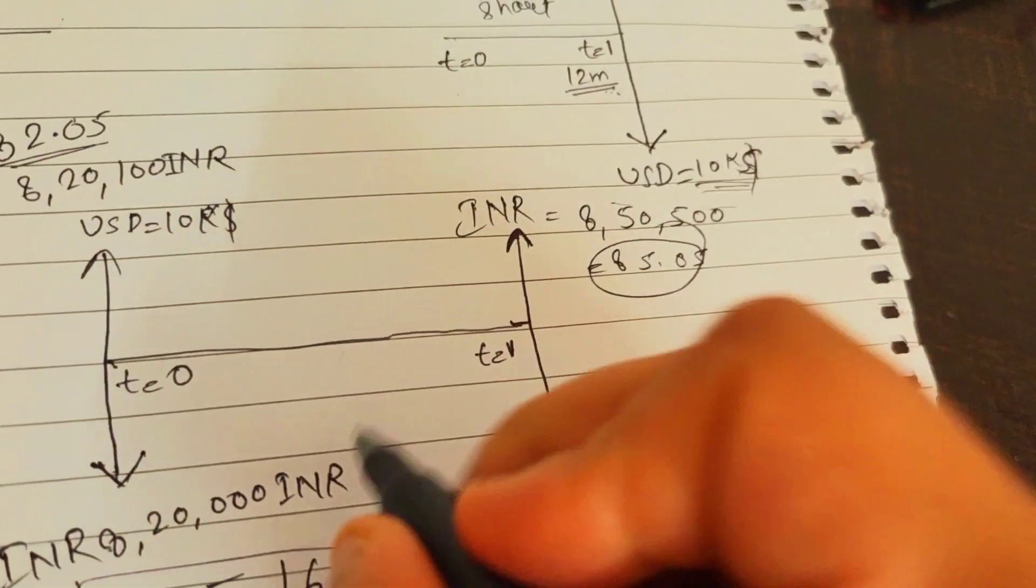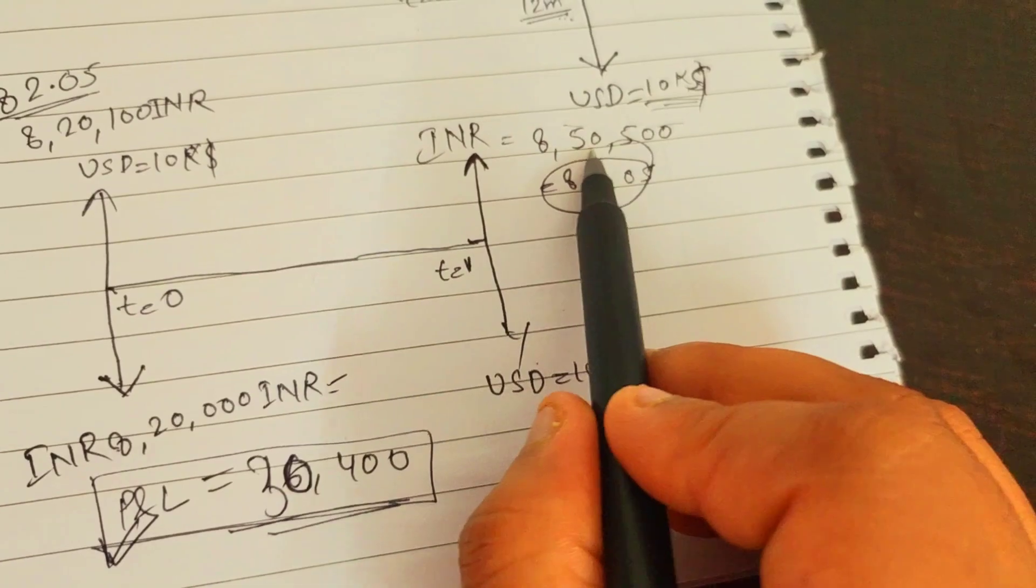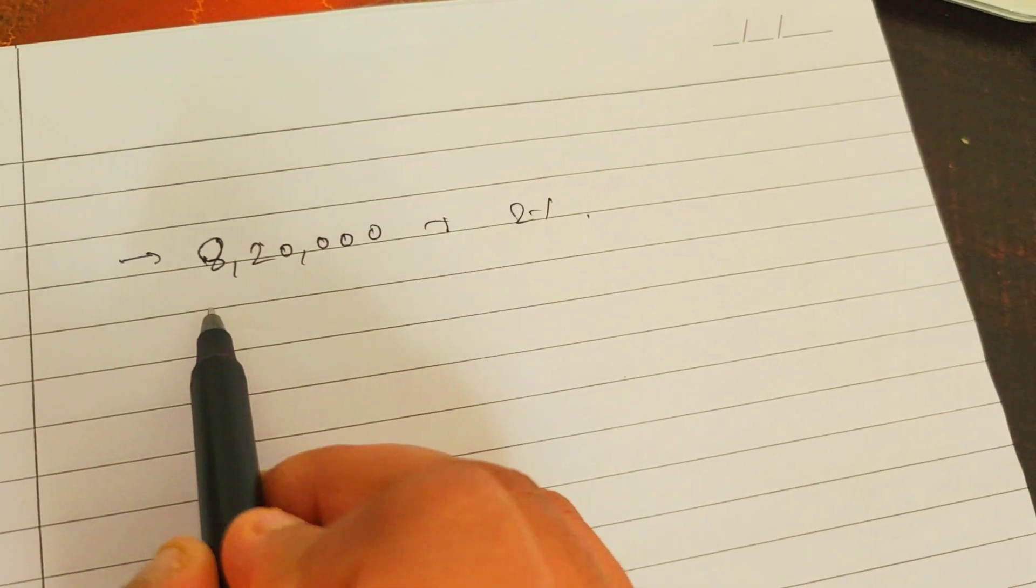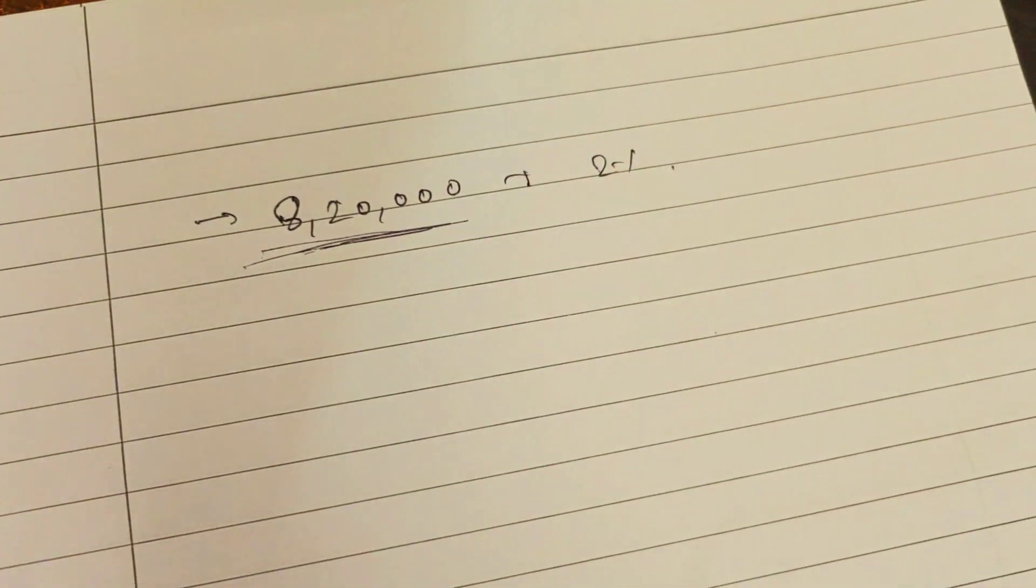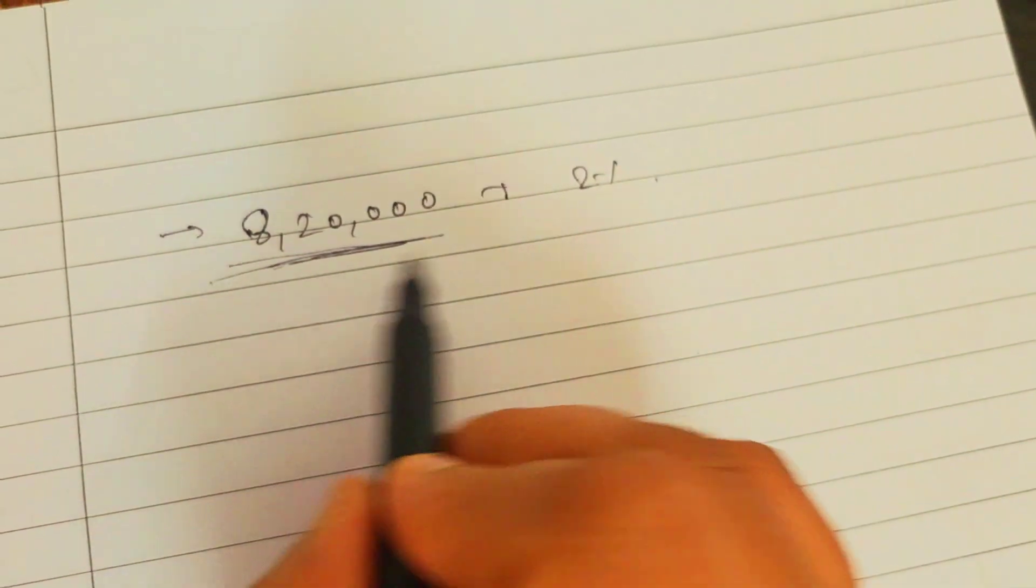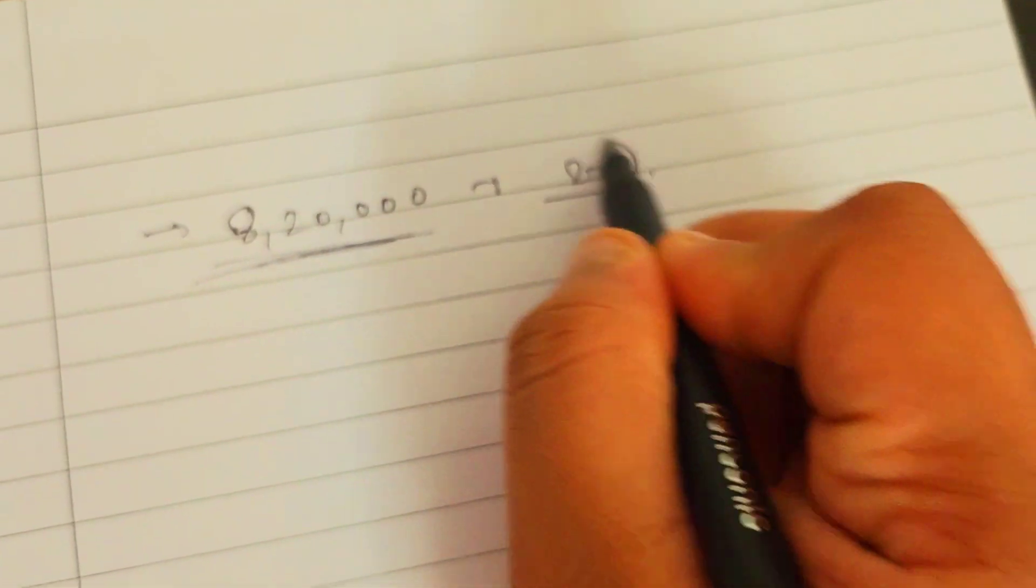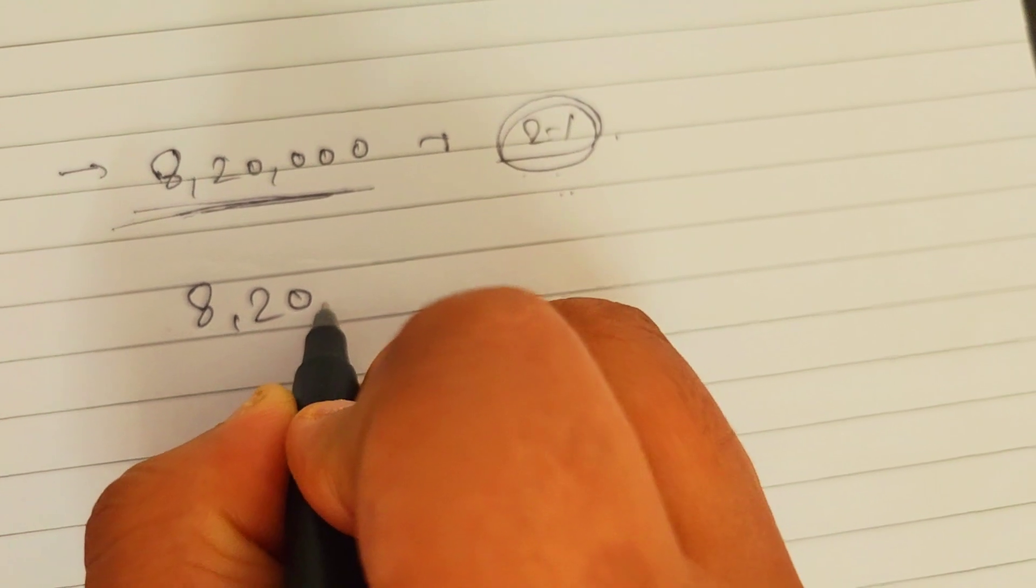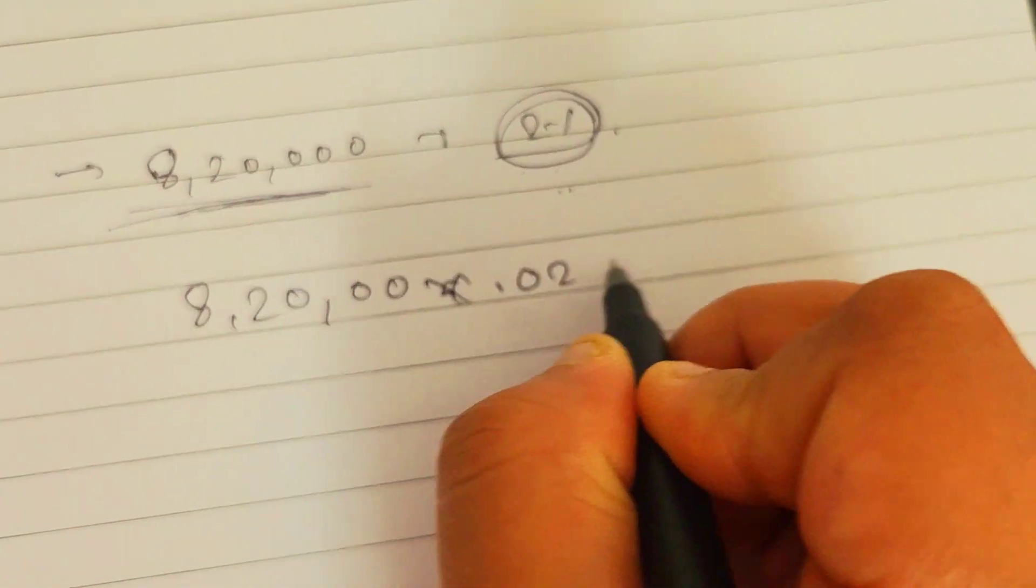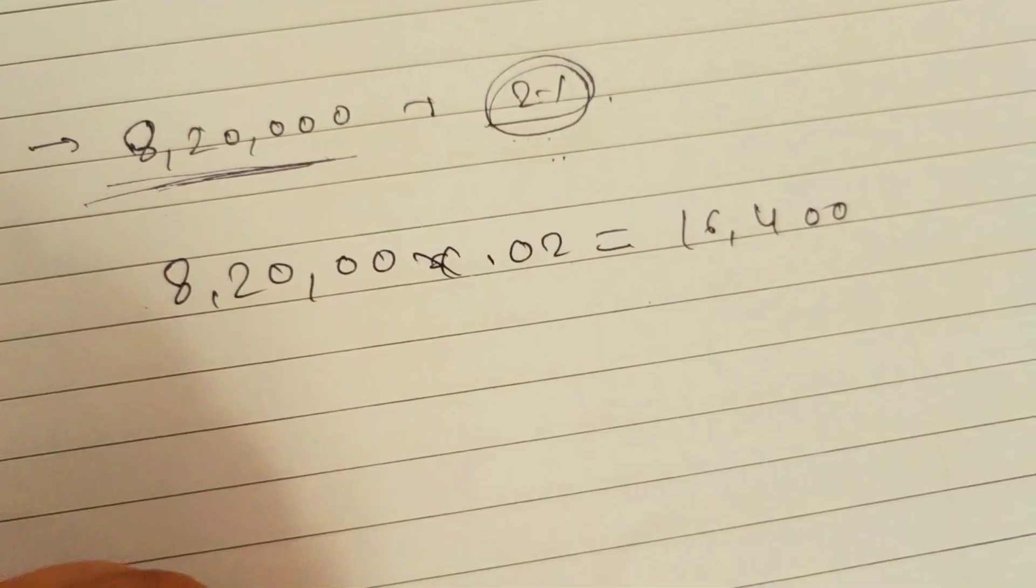The calculation here was incorrect, I was thinking about that. The total profit this person received is 30,400, which is 8,50,500 minus 8,20,000. If he didn't have this money at that point, he must have taken a loan utilizing 2% from some financial institution. The amount he paid as interest is 8,20,000 times 0.02%, which comes to 16,400.